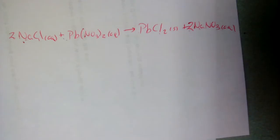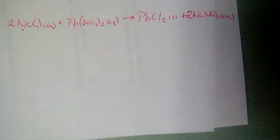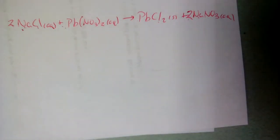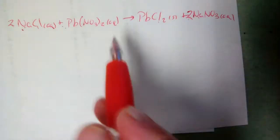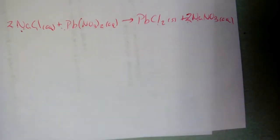That first step is a bit vague because it depends on what you're given. If the equation has no states, you use the solubility table to figure them out. If it's not balanced, you balance it. If you're only given the reactant side, you figure out the products. There are all kinds of ways this can be presented.